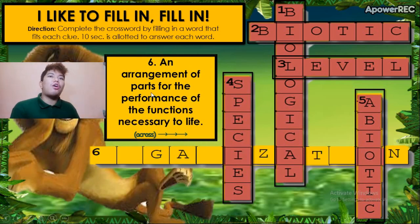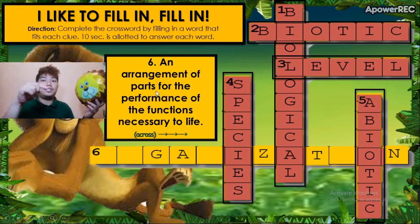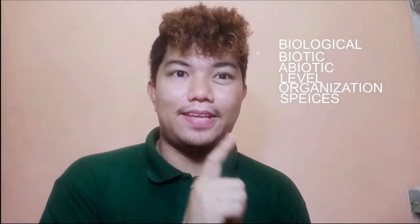Clue number six: an arrangement of parts for the performance of the functions necessary to life. If your answer is 'organization,' you're right. Congratulations! So what are those words? We have: biological, biotic, abiotic, level, organization, and species. Those words are very important because we will encounter them throughout our lesson today. Better to take note of those terms and their meaning. Let's proceed to our lesson.